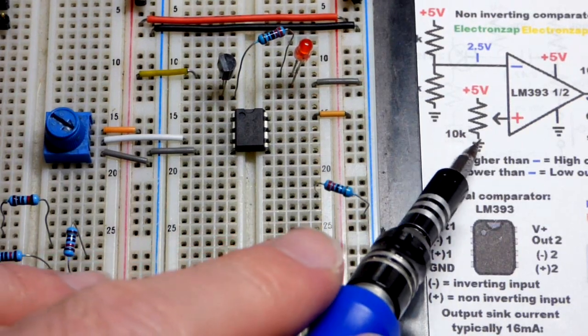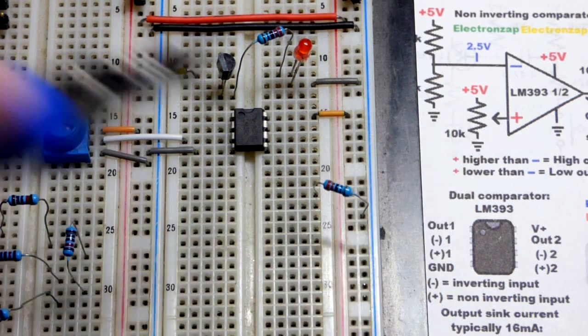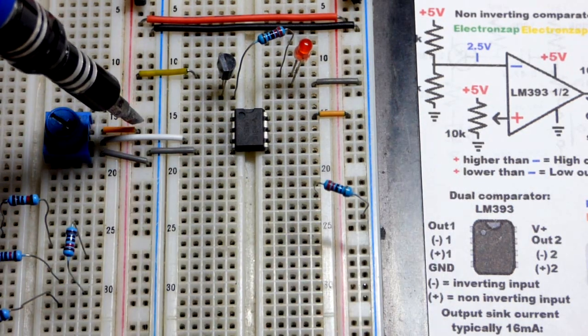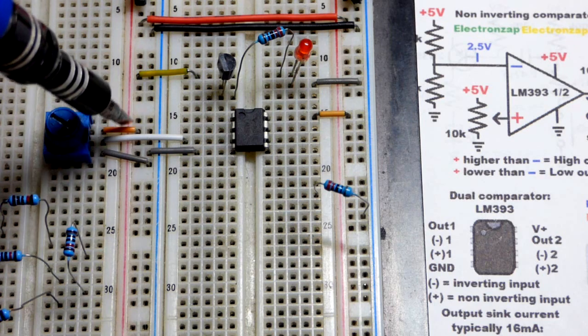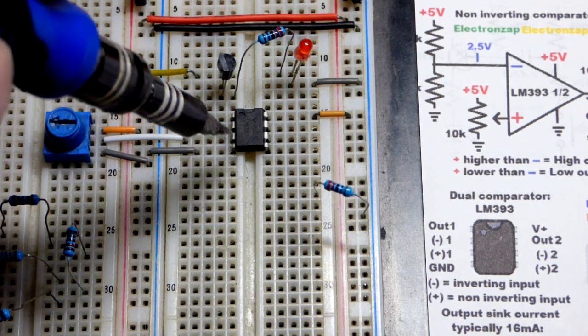So now as I do with many of my videos where I introduce something with a changing voltage, I got a trim pot here. Very easy way to adjust an output voltage. We have the positive supply there, negative supply there. Depending on where I turn the trim pot, we get a percentage of that voltage.